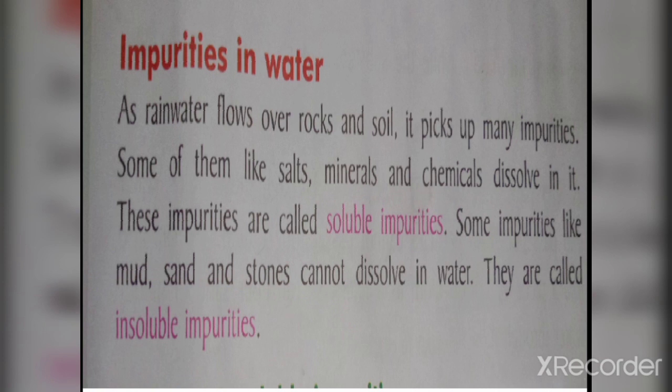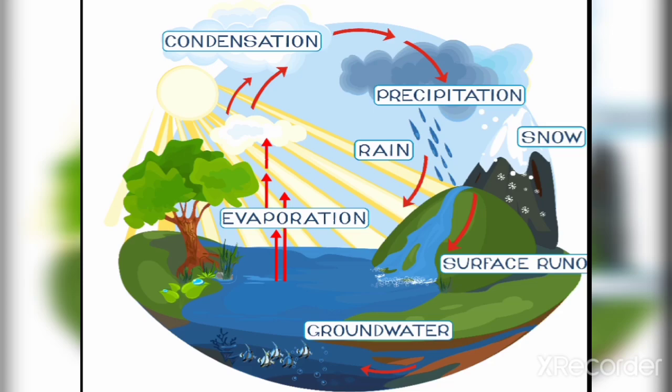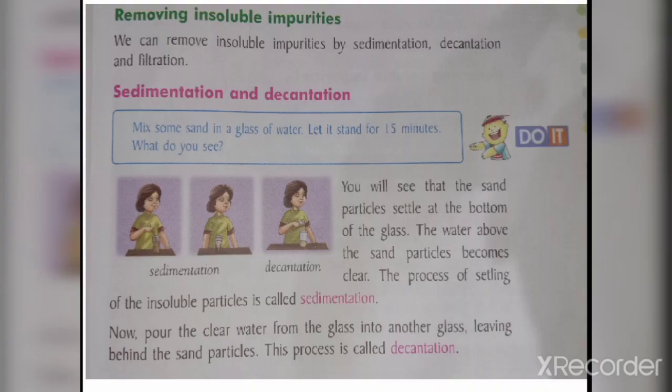How can we remove the impurities? We can remove impurities by sedimentation, decantation, and filtration — there are three methods. First, we will study sedimentation and decantation, and we will conduct an activity.